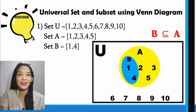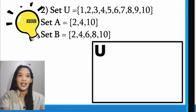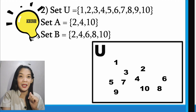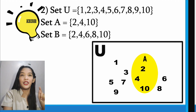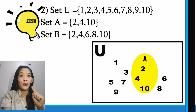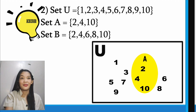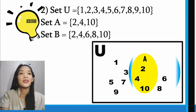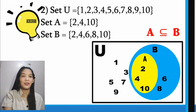Next, we have number 2. Our universal set contains the elements 1 to 10. The elements of set A are 2, 4, and 10. The elements of set B are 2, 4, 6, 8, and 10. Every element in A is also an element in B. From here, using the Venn diagram, we can say that A is a subset of B.